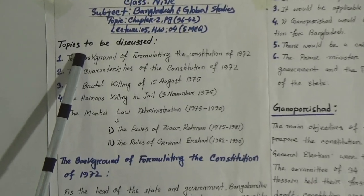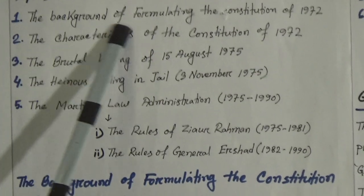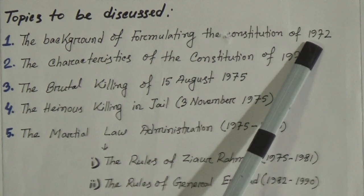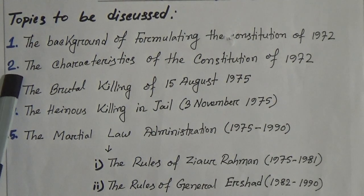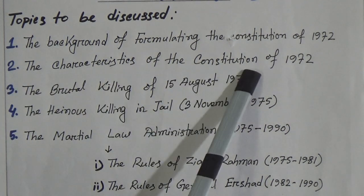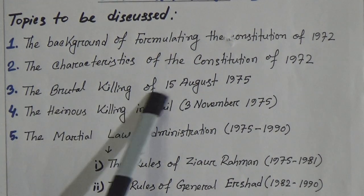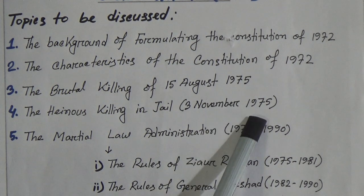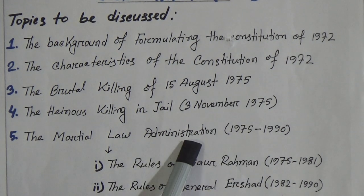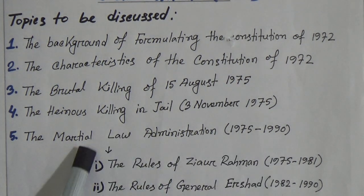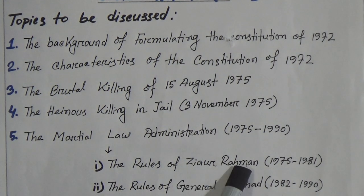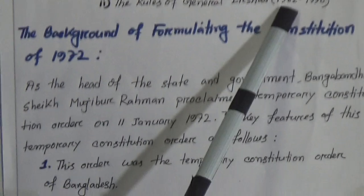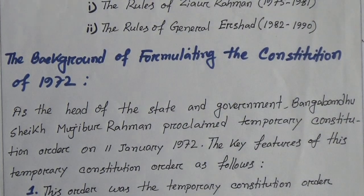At first I will show you the topics for today's class. Number one, the background of formulating the Constitution of 1972. Number two, the characteristics of the Constitution of 1972. Number three, the brutal killing of 15 August 1975. Number four, the heinous killing in jail, 3rd November 1975. And number five, the martial law administration from 1975 to 1990, which has two parts: the rule of Ziaur Rahman from 1975 to 1981, and the rule of General Ershad from 1982 to 1990.